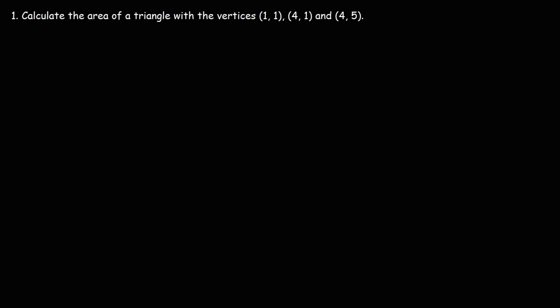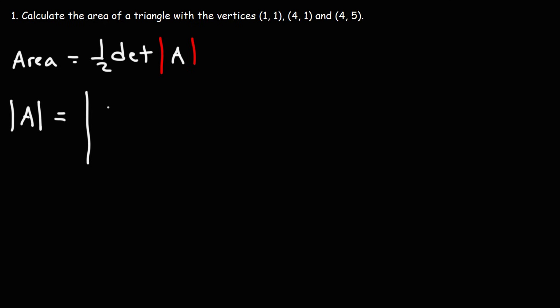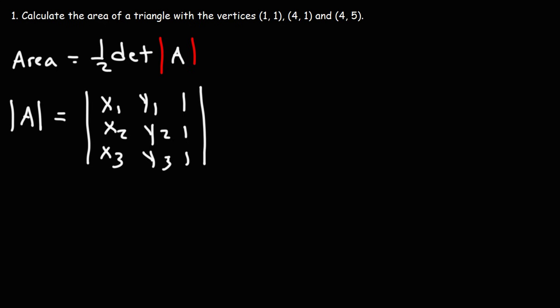In this video we're going to talk about how to calculate the area of a triangle if we're given the three vertices. To calculate the area we could use this formula: it's one-half the absolute value of the determinant of a 3 by 3 matrix. Let's call that matrix A. Matrix A is defined with the first column having x1, x2, x3 and the second column y1, y2, y3.